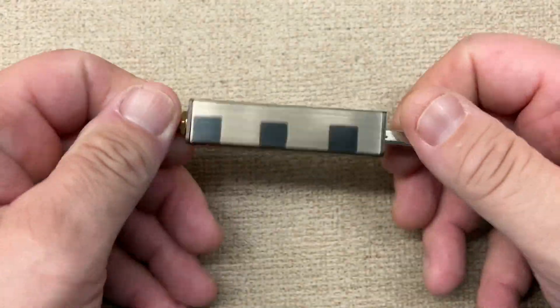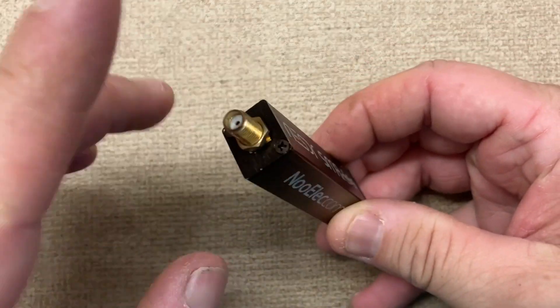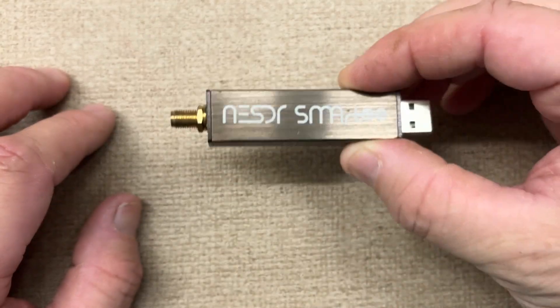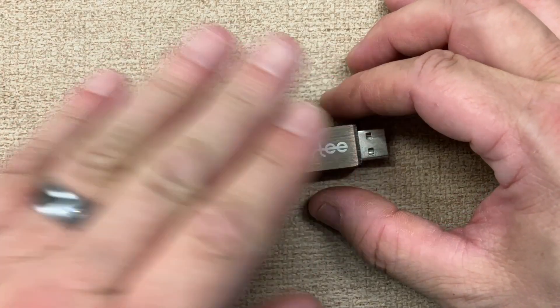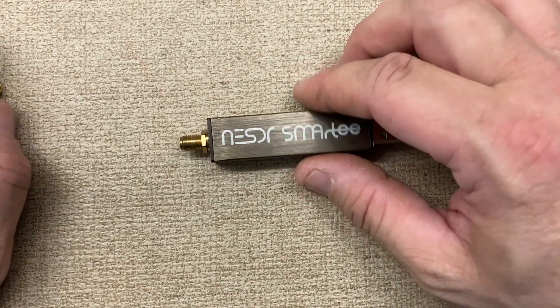Alright, Fuzz Pie Guy here. You're looking at the Nooelec Smart T, a bias-T that's always on. But we're not going to talk about this - that ain't the purpose of the video.